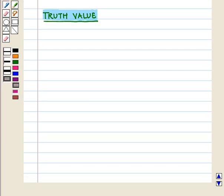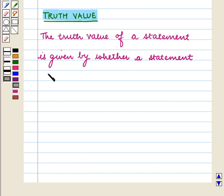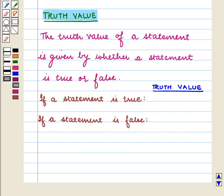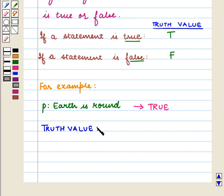Now let us discuss the truth value. The truth value of a statement is given by whether a statement is true or false. If a statement is true, the truth value is T. And if a statement is false, the truth value is F. For example, the statement P: 'Earth is round' is true, so its truth value will be T.